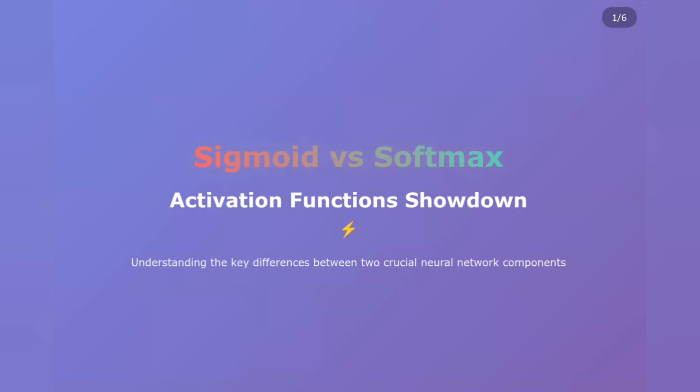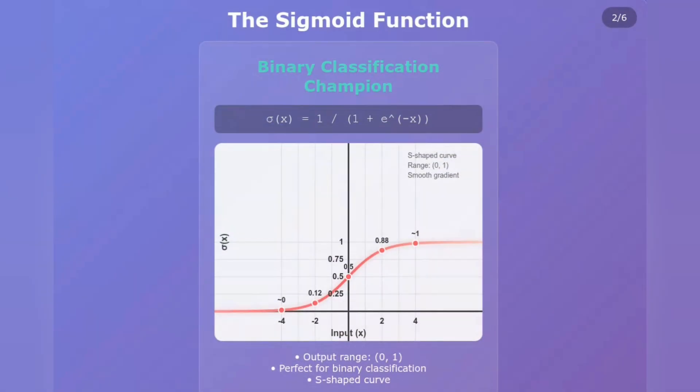First up, let's meet the Sigmoid function — the OG of activation functions. Look at this beautiful S-shaped curve. The formula is simple but powerful: sigma of x equals 1 divided by 1 plus e to the negative x.